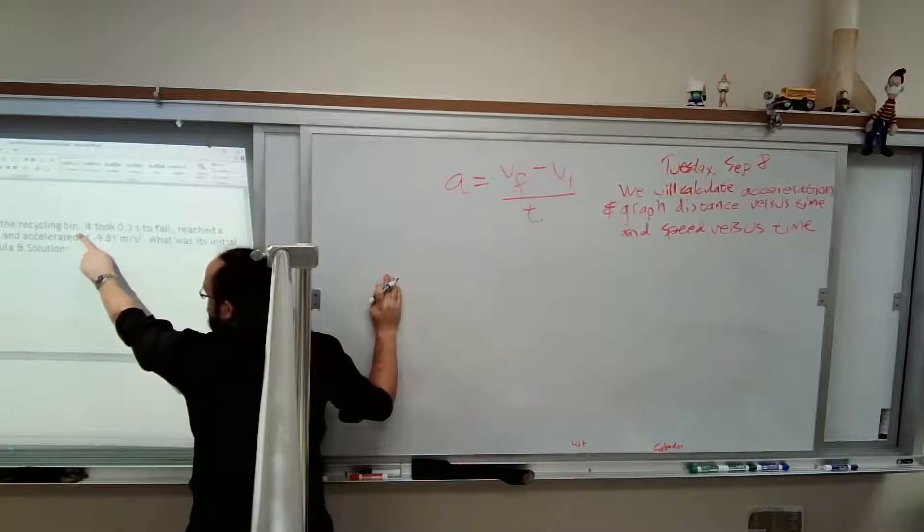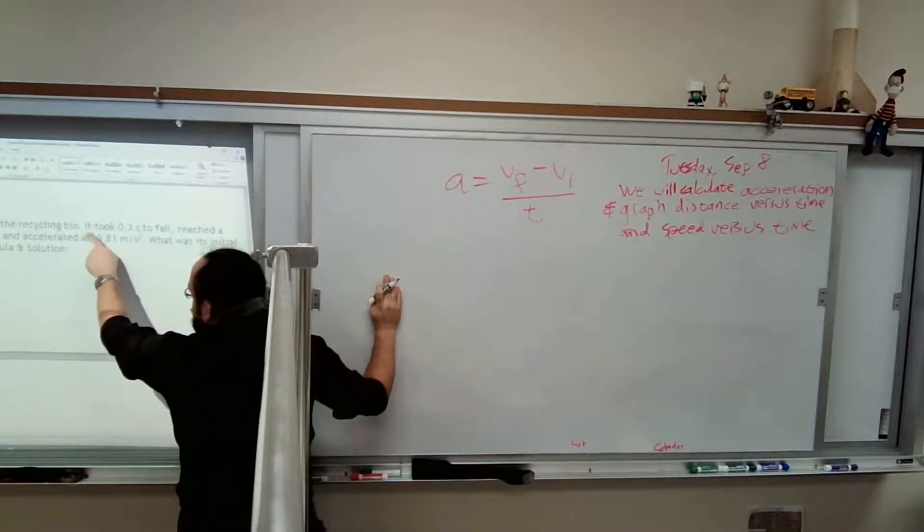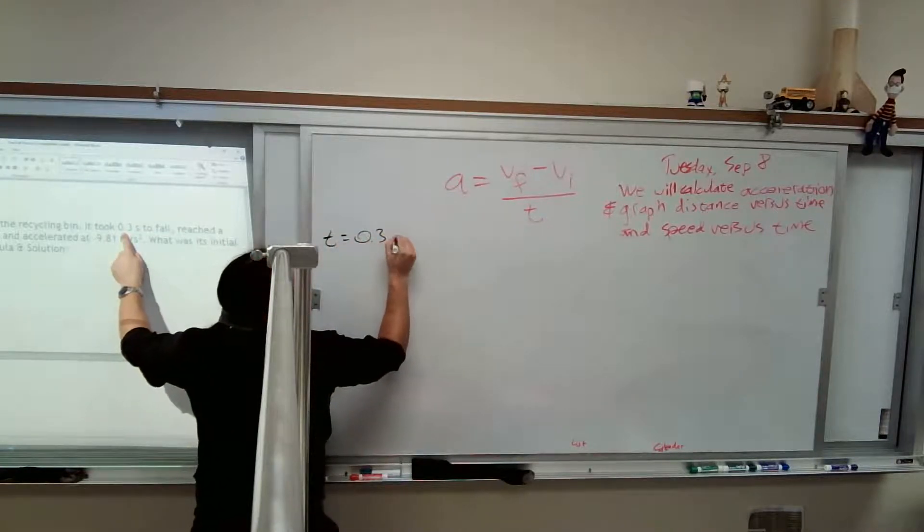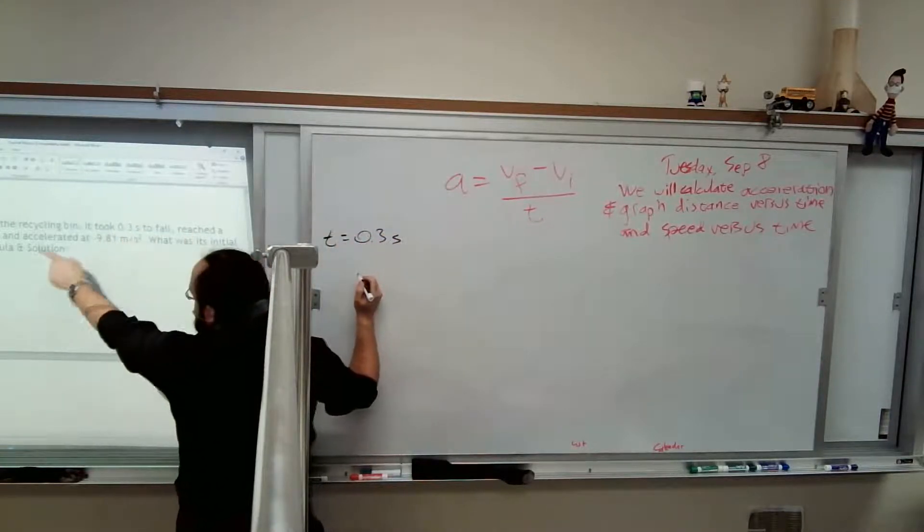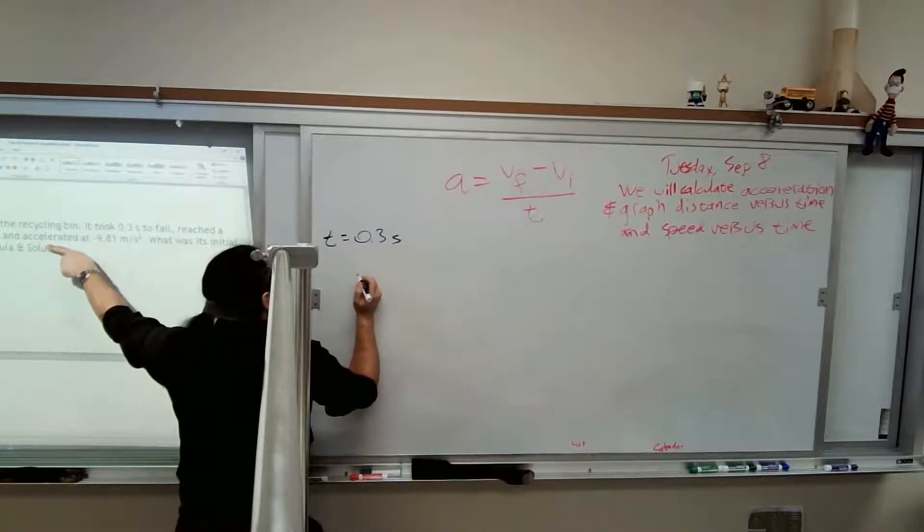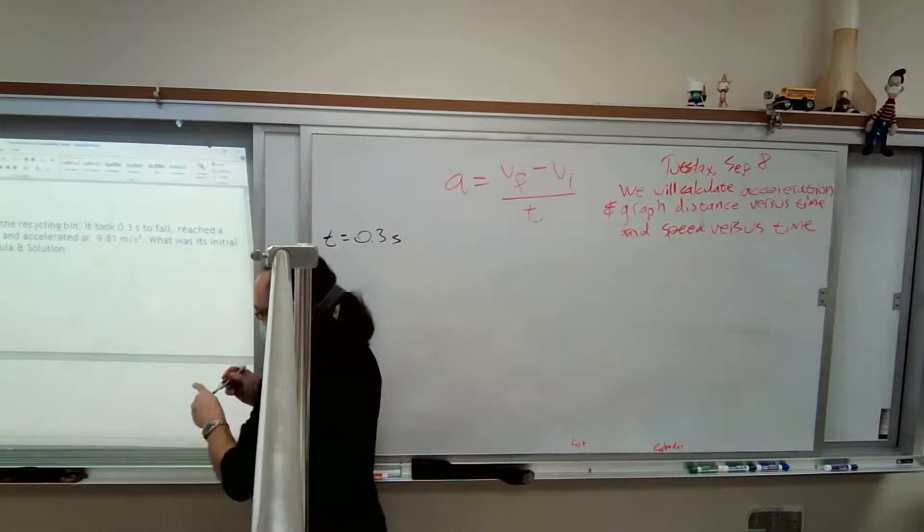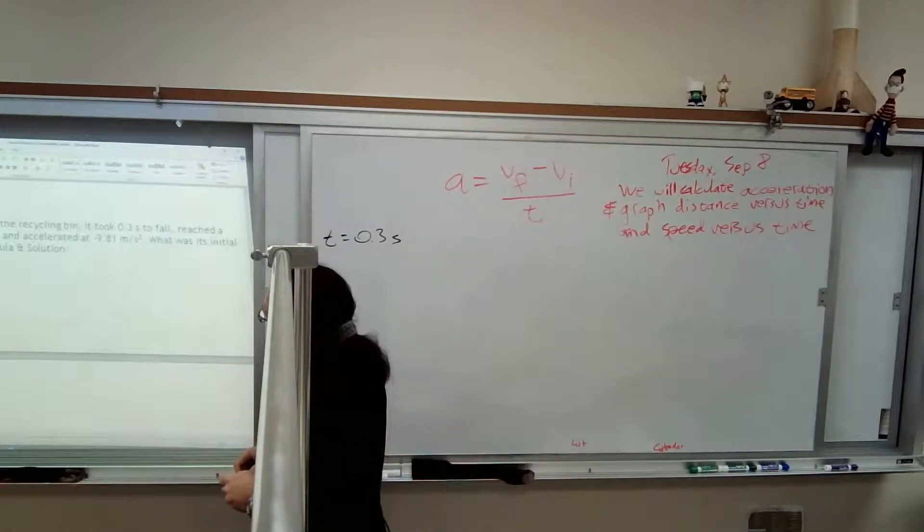Piece of paper fell on the recycling bin. Okay, that's nothing to do yet. It took 0.3 seconds to fall. Reached a maximum speed of 3.3 meters per second. Oh man, maximum. That's another key word.